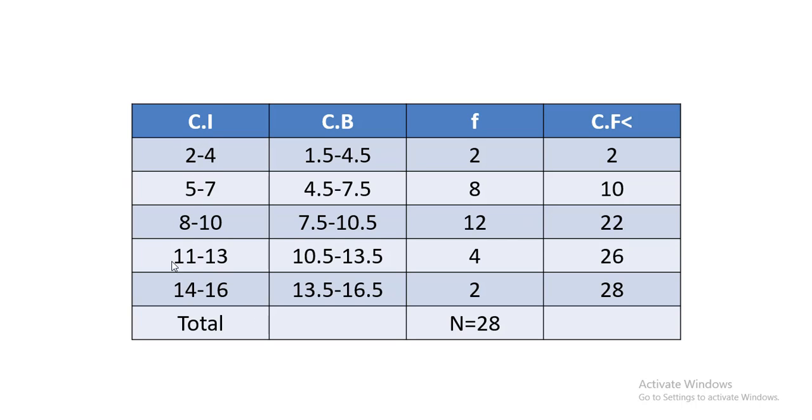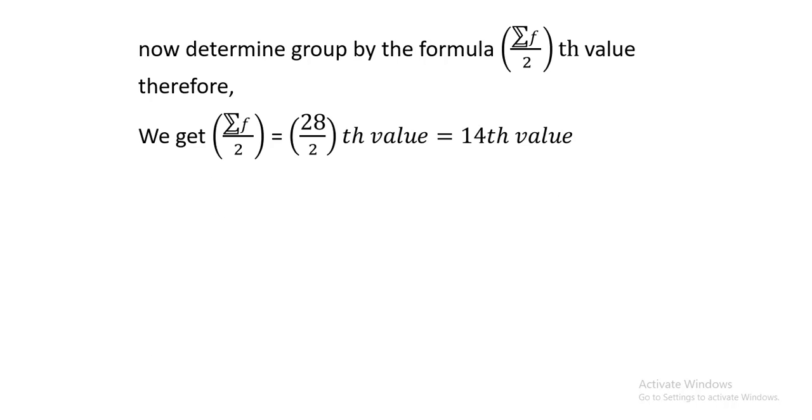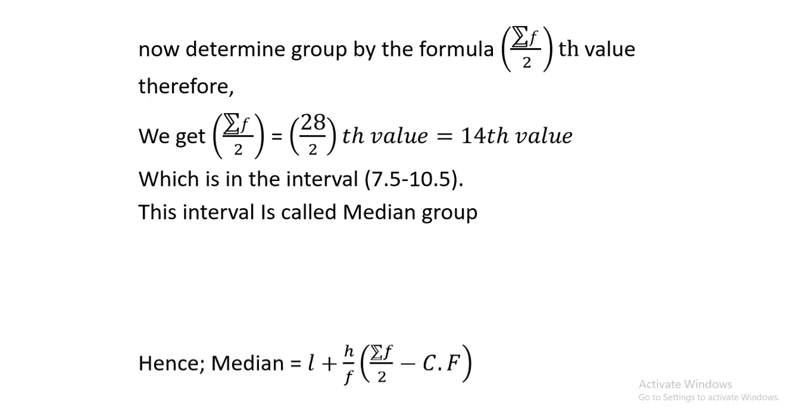Since they all are equal classes, height is 8 minus 5 is 3. So height is 3. Lower class boundary is 7.5. Frequency is 12. And cumulative frequency preceding to median class is 10. So these are all the values which are required.